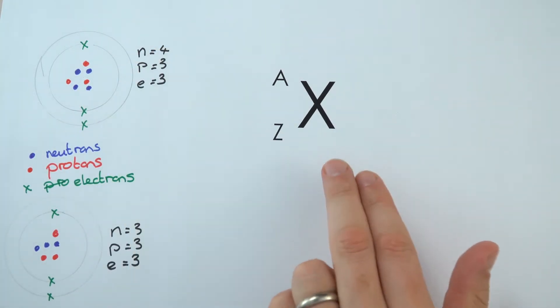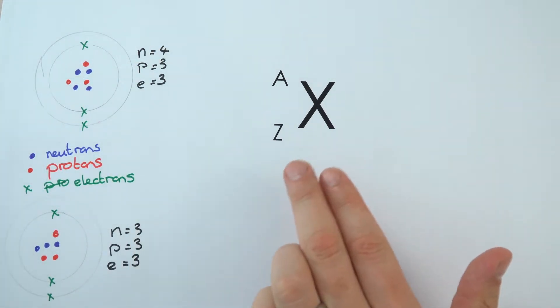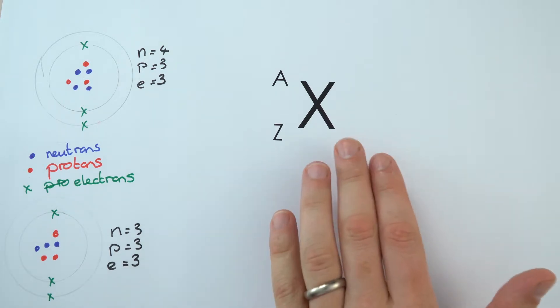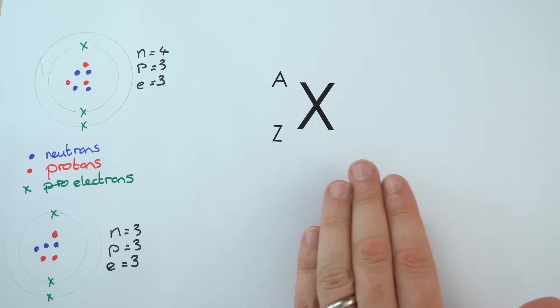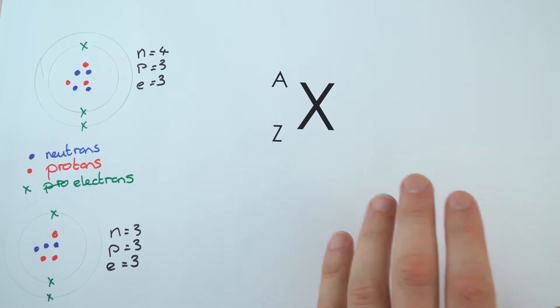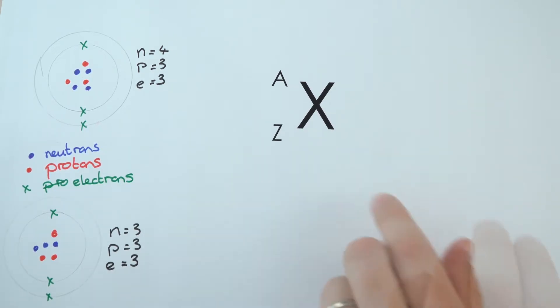So this is our nuclear notation and really we have a couple of numbers that we put to the left hand side of the chemical element. Now the chemical element, you'll have been doing this for years in chemistry, this could be HE for helium, LI for lithium. It's just one or two letters that are the shorthand version of that long name.